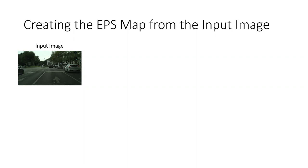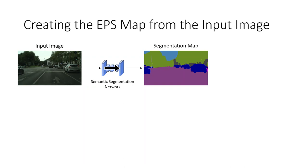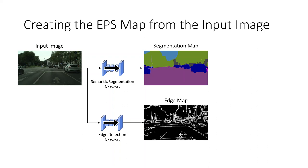Let us now take a closer look at how the EPS maps are generated. We start with the original image and use it as the input for a semantic segmentation network. The detected semantic classes are encoded with different colors in the output image, using the same class-to-color mapping as in the popular Cityscapes benchmark. However, this choice is arbitrary and every mapping that contains all required classes could be used. In the next step, we take the original image as input for an edge detection network to generate an edge map.